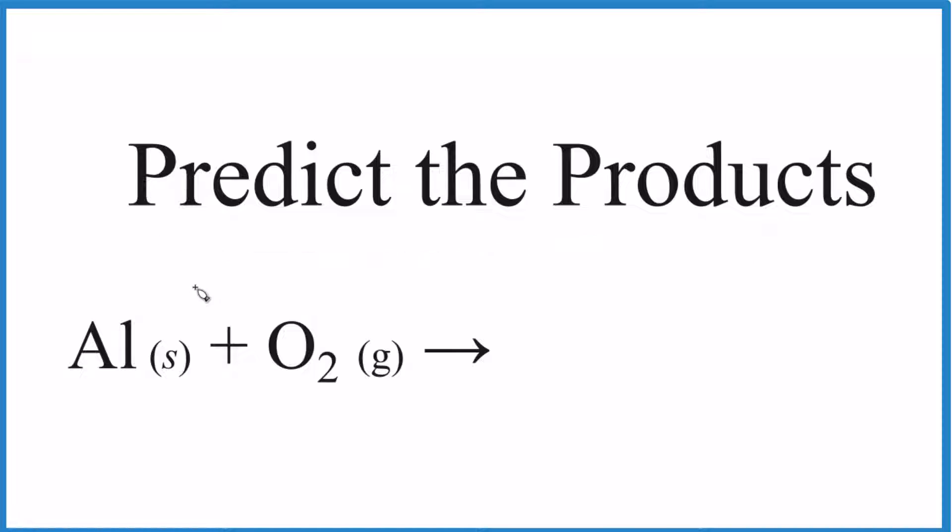Let's predict the products when we have aluminum plus oxygen gas reacting. When we look at the type of reaction, we have aluminum and oxygen - just two different atoms. So it looks like the aluminum and oxygen would combine in a combination or synthesis reaction that would give us AlO.